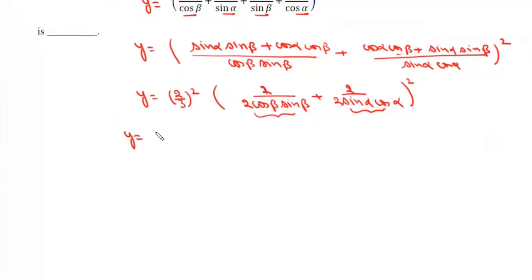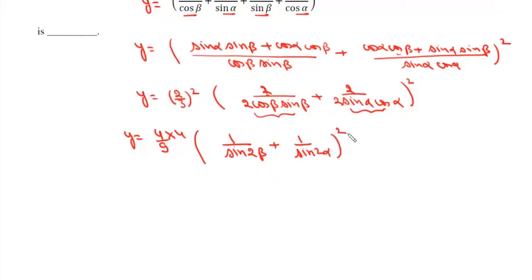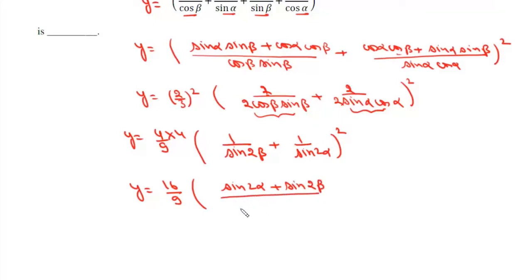So y equals (4/9), and taking the factor of 4 out, we get y = (16/9) × (1/sin(2β) + 1/sin(2α))², which we rewrite as (16/9) × ((sin(2α) + sin(2β)) / (sin(2α)·sin(2β)))², whole squared.